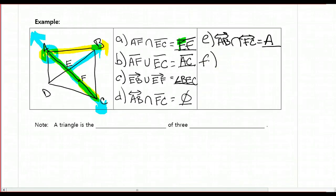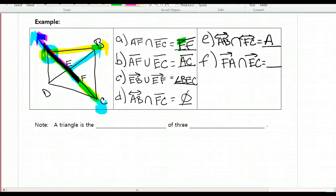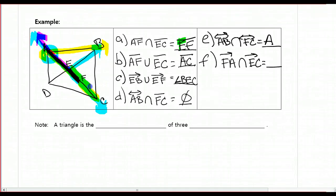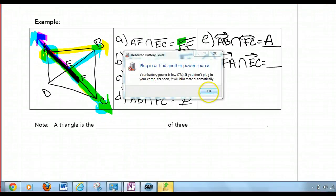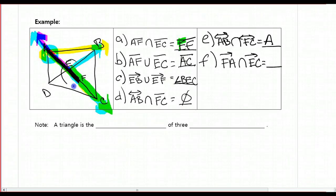We've got two more. Example F. We've got ray FA, and we want to find the intersection with ray EC. Feel free to pause the video if you want to try and figure it out. Ray FA starts at F and goes in the direction of A forever. And ray EC starts at E and goes in the direction of C forever. We can see that they kind of intersect right over here from E to F. So that's going to be segment EF.